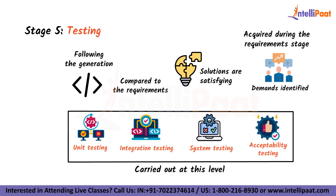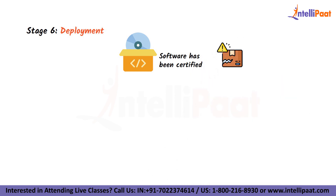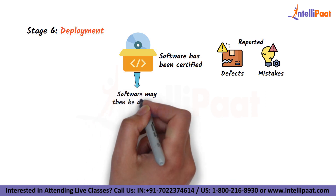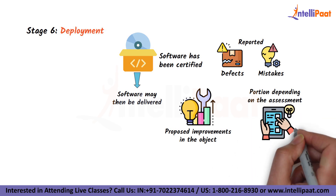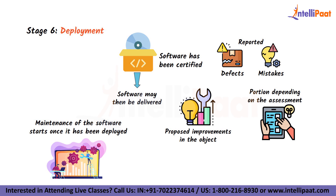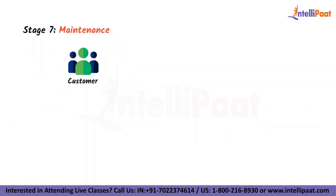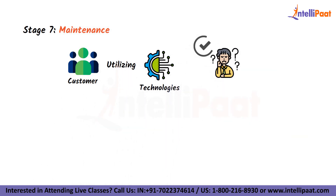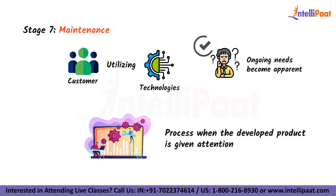Then we have the next stage called deployment. When the software has been certified and no defects or mistakes have been reported, it is put into use. The software may then be delivered as is or with proposed improvements depending on the assessment. The maintenance of the software starts once it has been deployed. When the customer begins utilizing the technologies that have been designed, the true problems and ongoing needs become apparent. Maintenance is the process when the developed product is given attention.